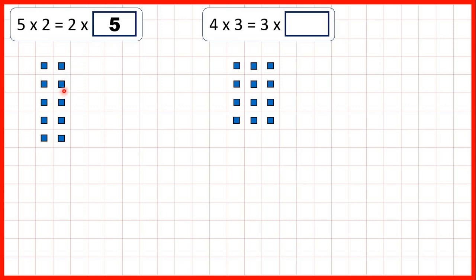To see that, we can show an array. Looking at it this way, we can have 5 groups of 2, because 2 plus 2 plus 2 plus 2 plus 2 is 10, so 5 lots of 2 makes 10.